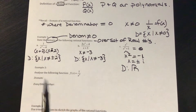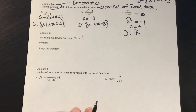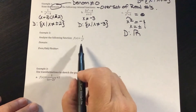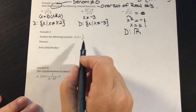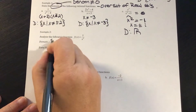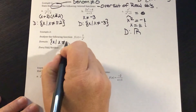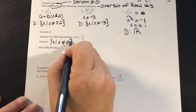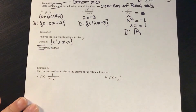In example 2, we analyze the function f of X equals 1 over X squared. For the domain, I have all X where X cannot equal 0. This is an even function.